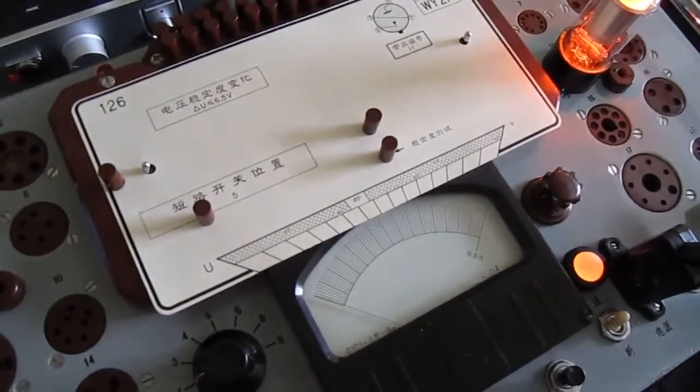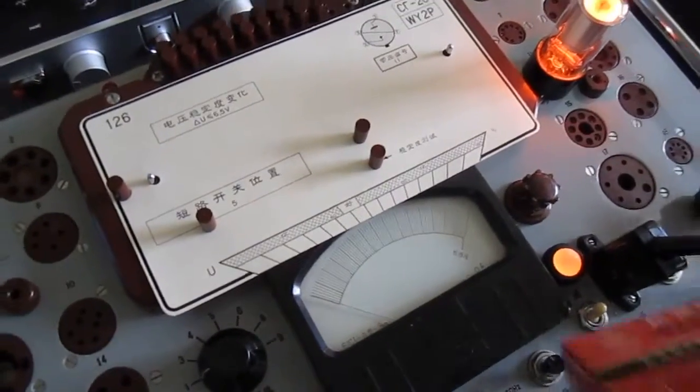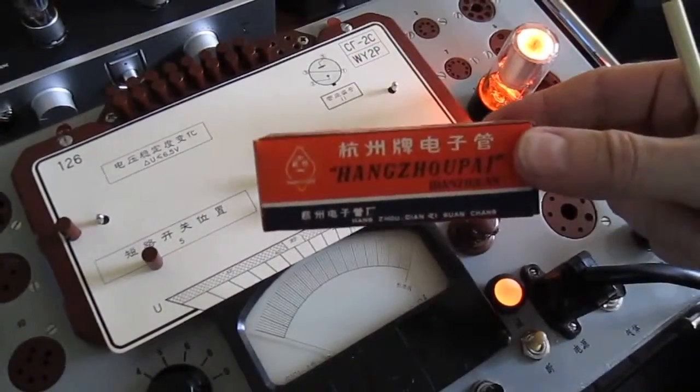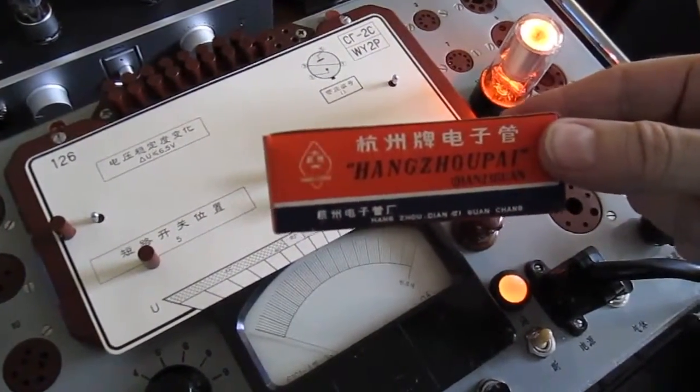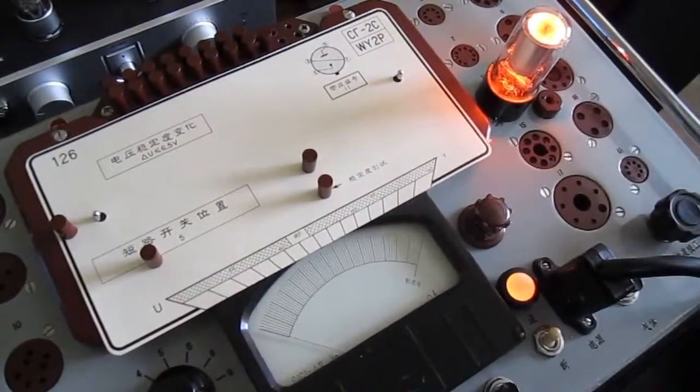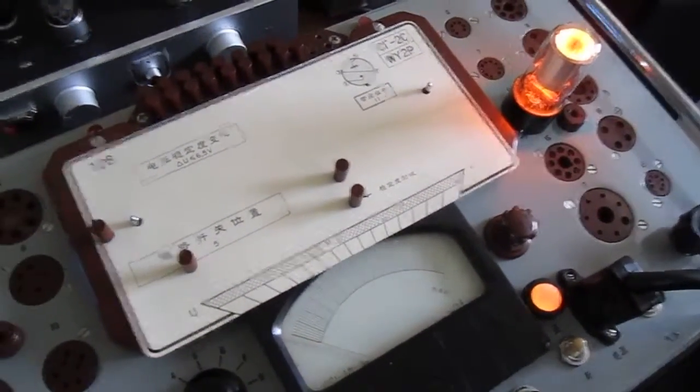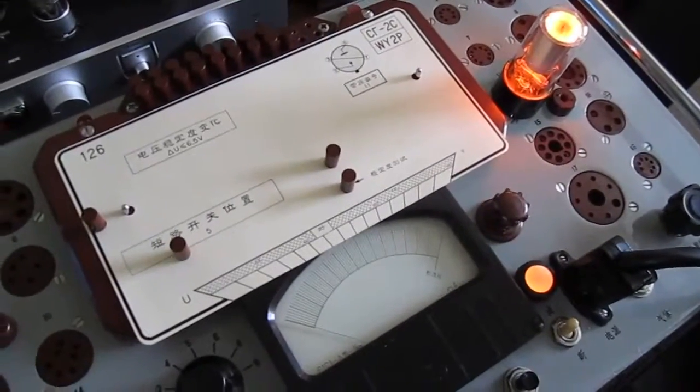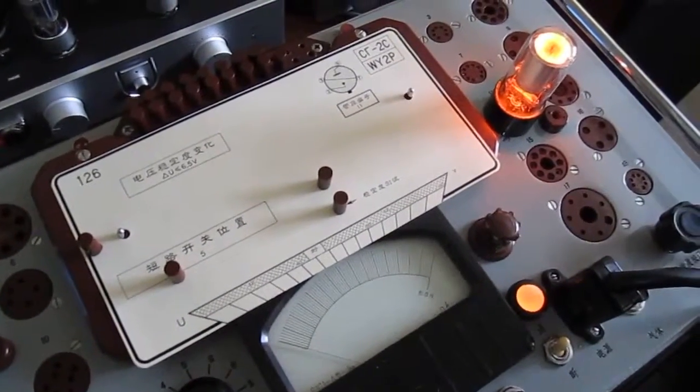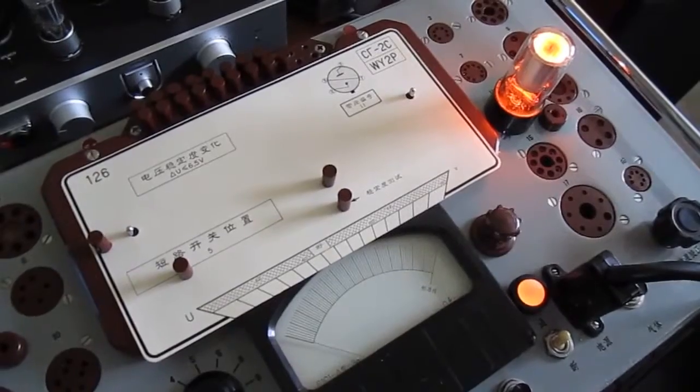Now ideally we'd be 75 volts. This particular brand, which is the Hangzhou tube here in China, is pretty darn good. If I get a box of 50, you'll see a variation anywhere from maybe 74 to maybe 75.5. Not bad at all, at least for the newer tubes.